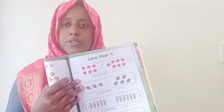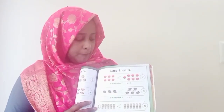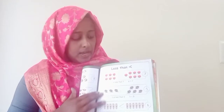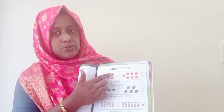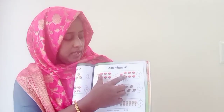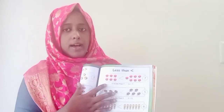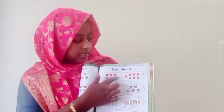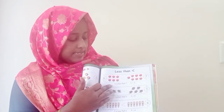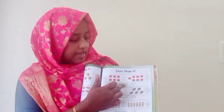This is a tomato. How many we have to count? Two sides. One tomato. This is a tomato. One tomato. Six tomatoes. How do we say this? 6 is less than 7. 6 is less than 7.